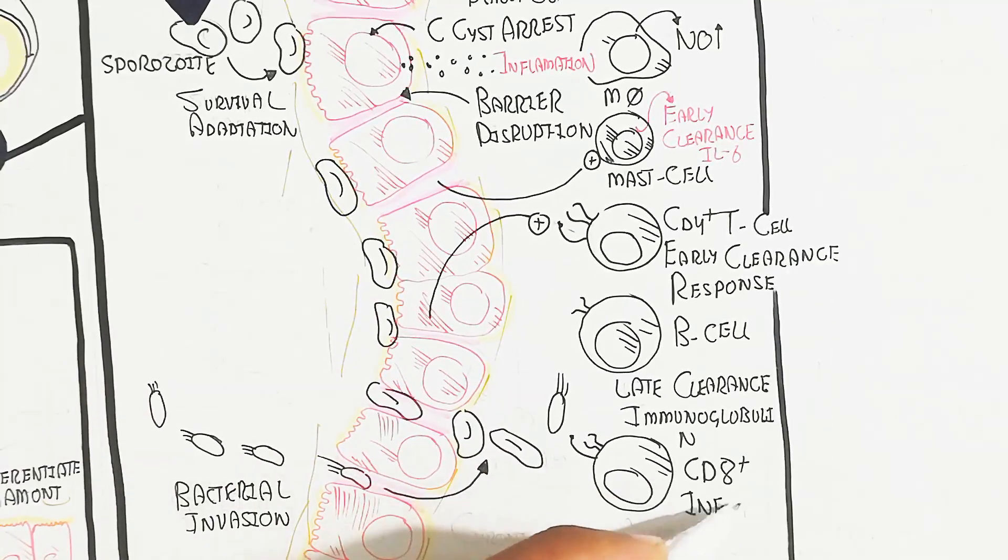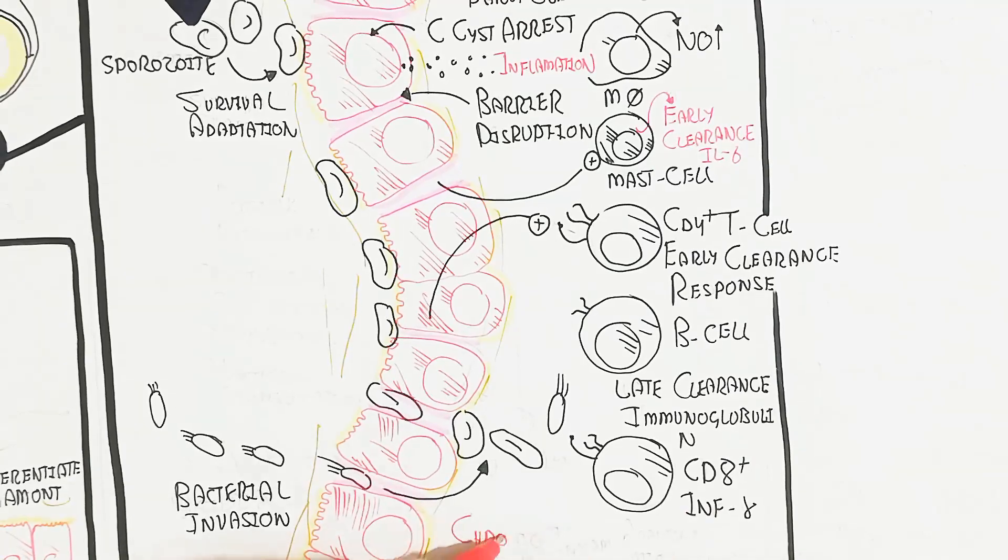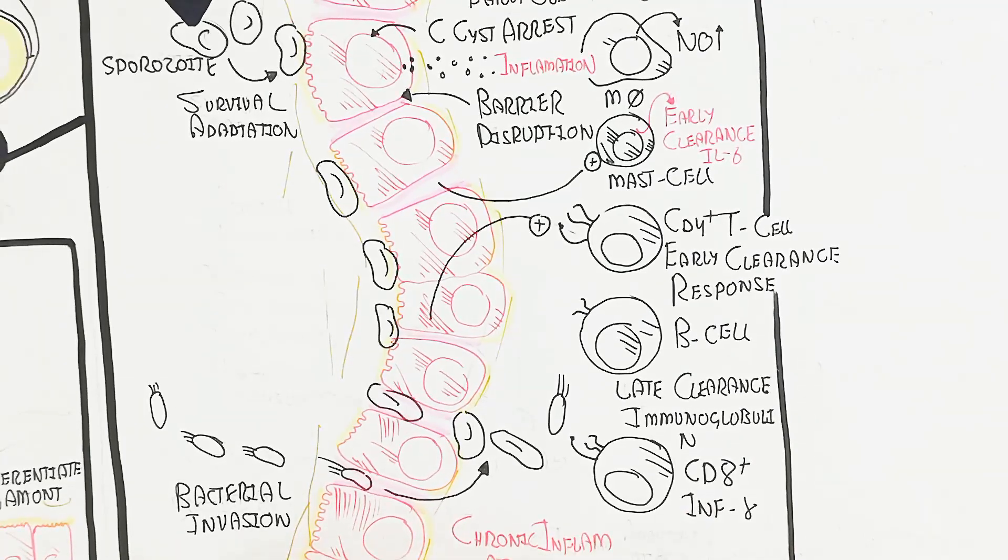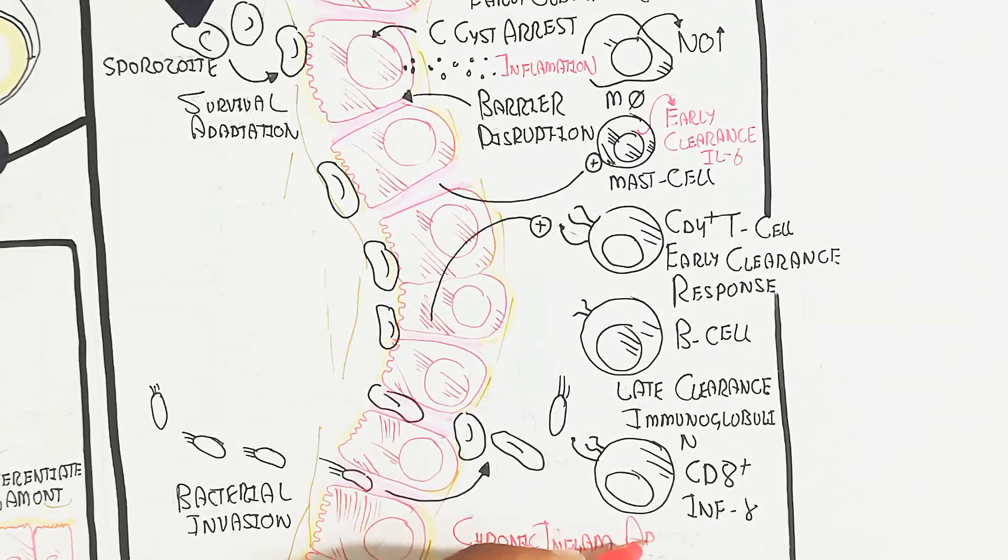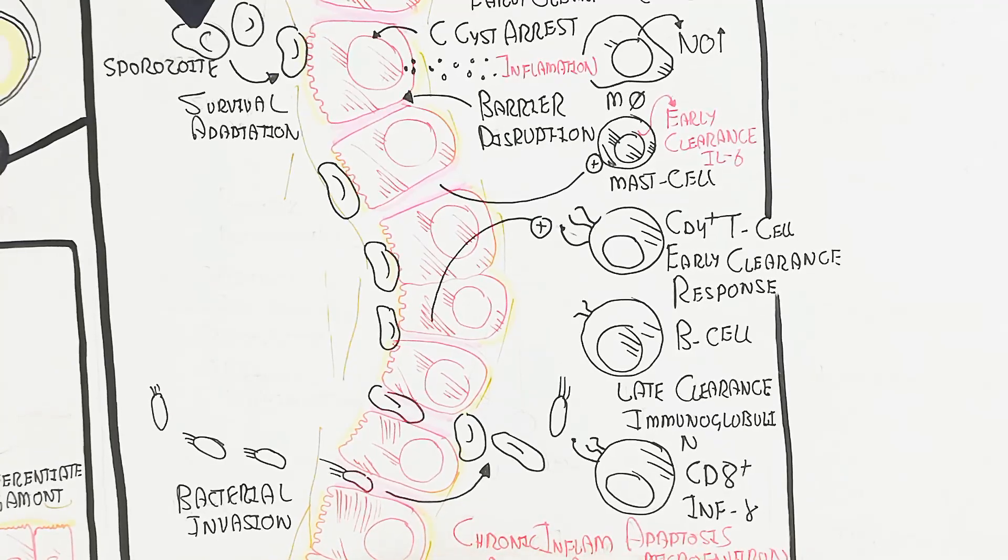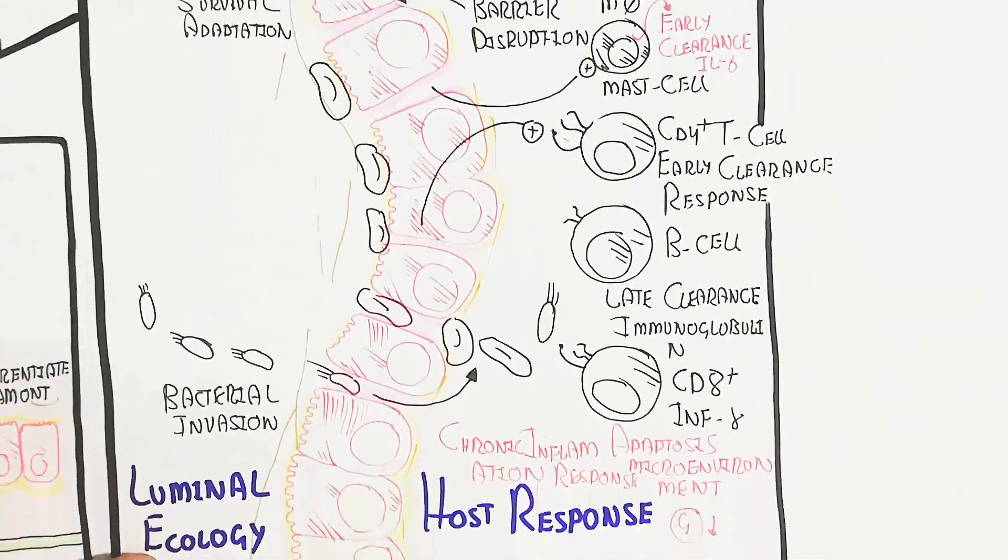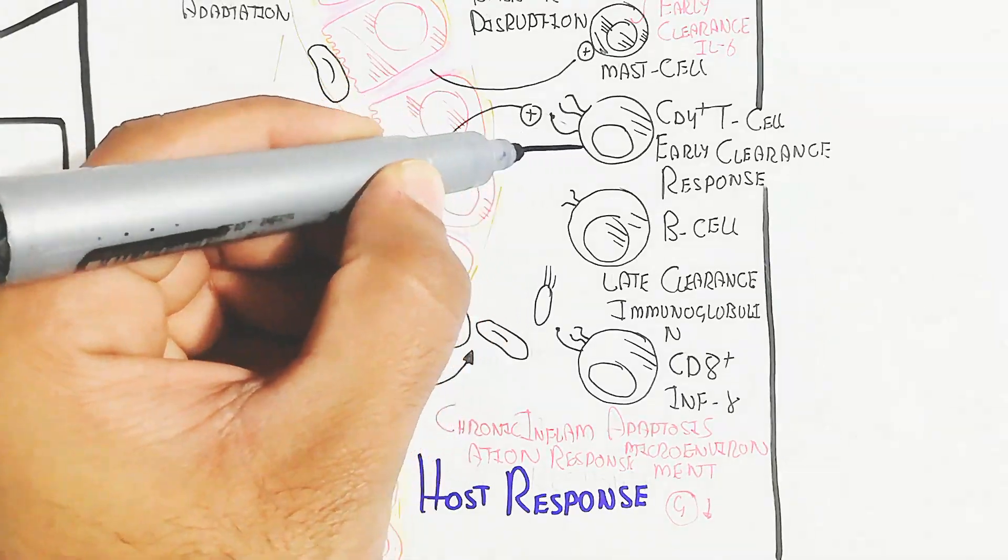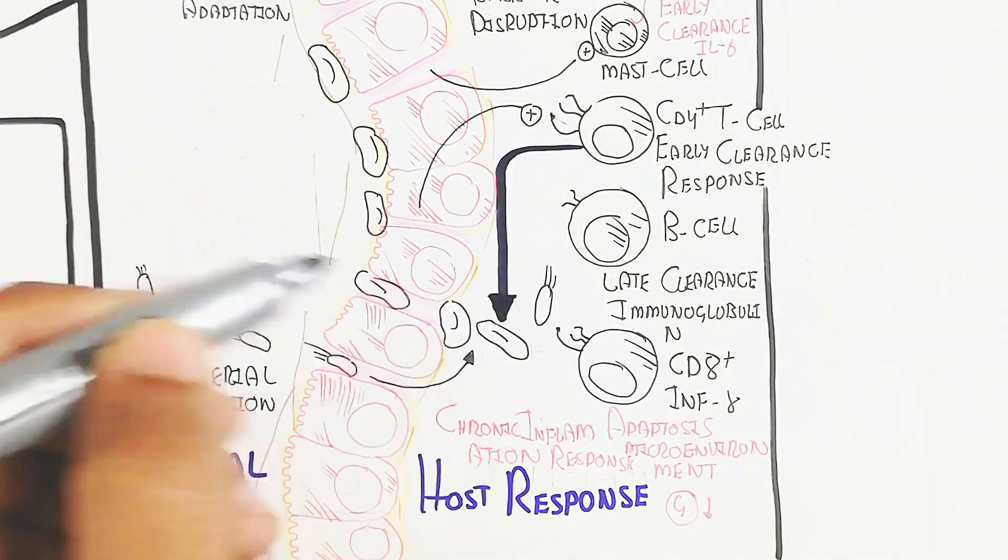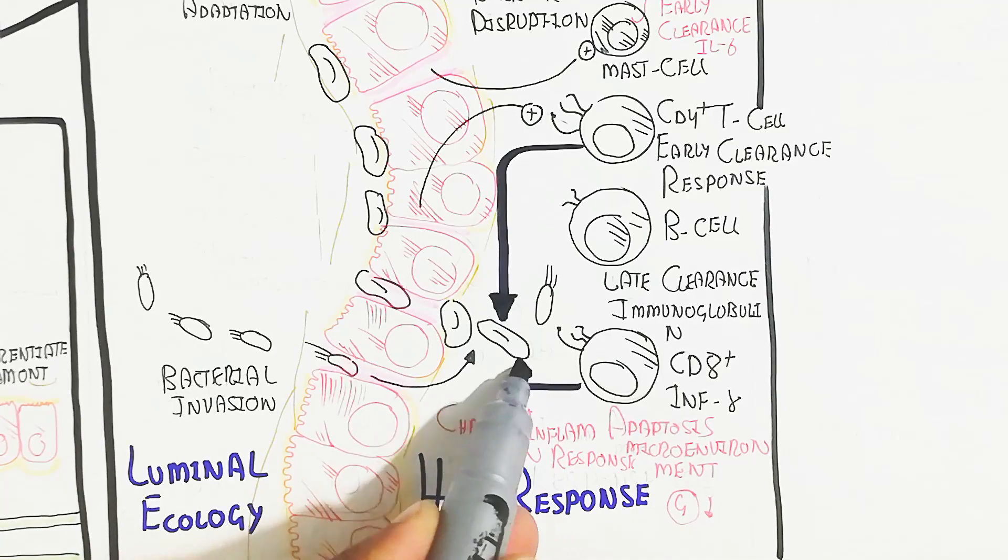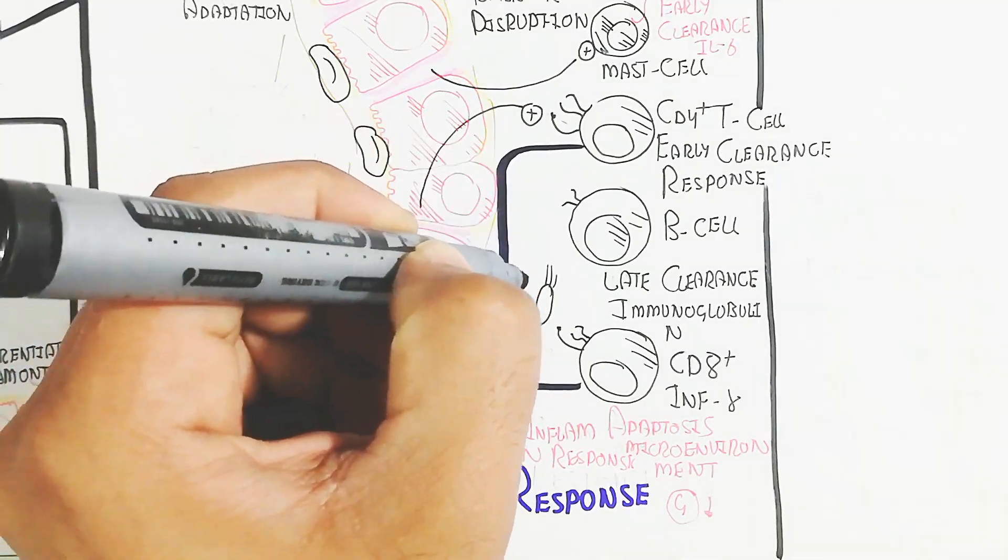Interferon gamma is important for recruitment of CD8 cells. The apoptotic microenvironment and decreased glucose contribute to chronic inflammation. This chronic inflammation leads to more damage of the epithelial enterocyte.